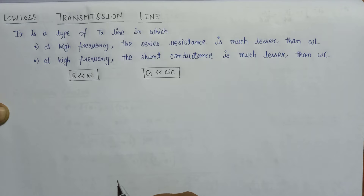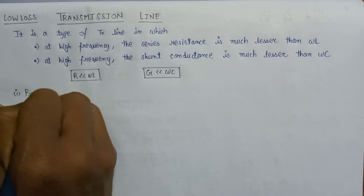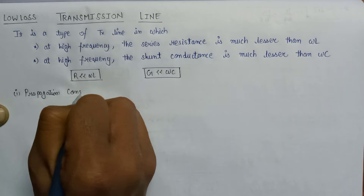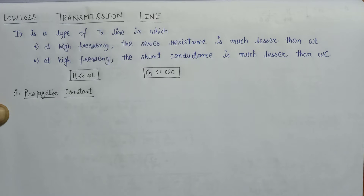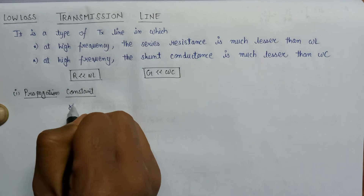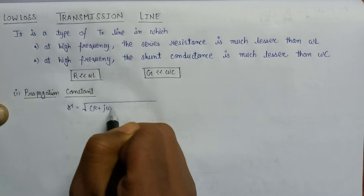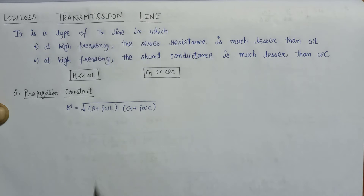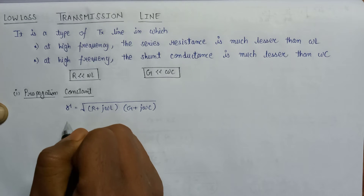Now let us discuss some parameters associated with the low loss transmission line. The first parameter is the propagation constant. The propagation constant is denoted by γ, whose expression is equal to √[(R + jωL)(G + jωC)]. On applying these two conditions, we can simplify the propagation constant expression.